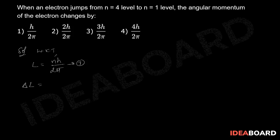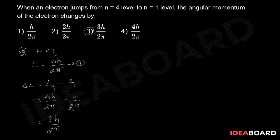Therefore, change in angular momentum ΔL = angular momentum in the fourth level minus angular momentum in the first level = 4h/2π − h/2π = 3h/2π. So the correct option is the third one.